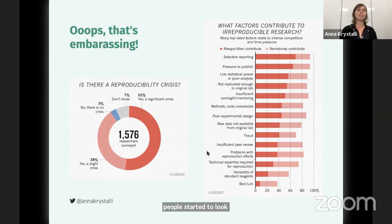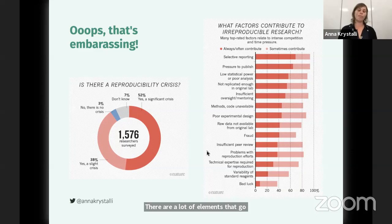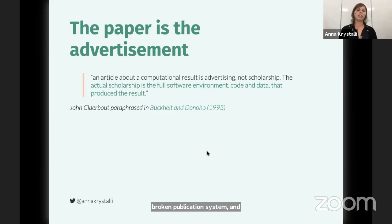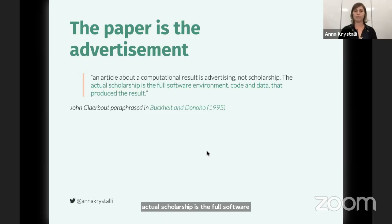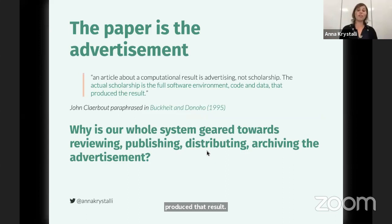There are a lot of elements that go into this, a lot of them to do with our broken publication system and incentive system. But I think this particular quote captures our problem really well: an article about a computational result is advertising — it's not the actual scholarship. The actual scholarship is the full software environment, code, and data that produce that result. Our system is still geared primarily towards reviewing, publishing, distributing, and archiving the advertisement. And to me, that's a problem and a real shame — it's a bit of a waste.